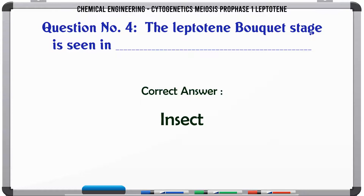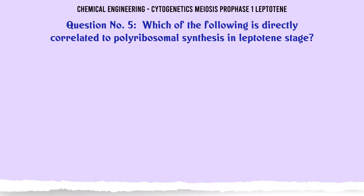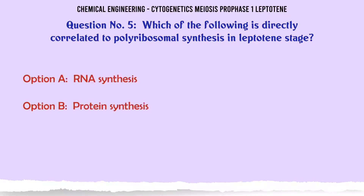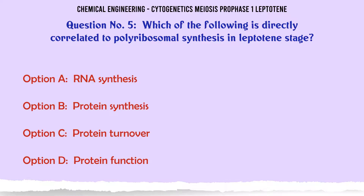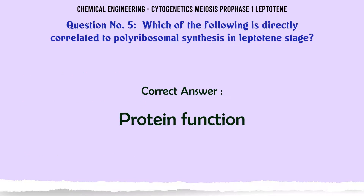Which of the following is directly correlated to polyribosomal synthesis in the leptotene stage? A. RNA synthesis. B. Protein synthesis. C. Protein turnover. D. Protein function. The correct answer is: Protein function.